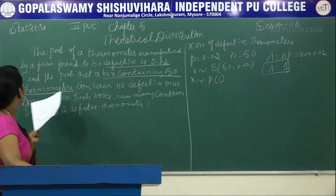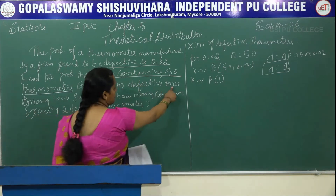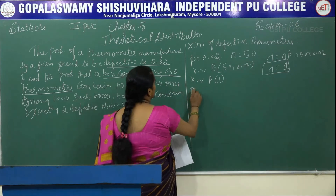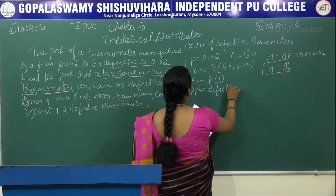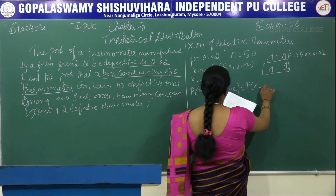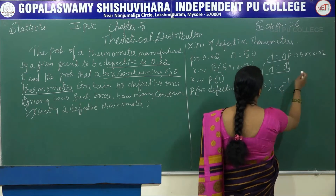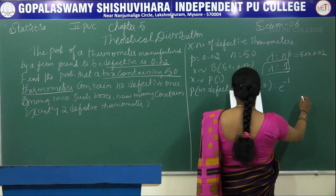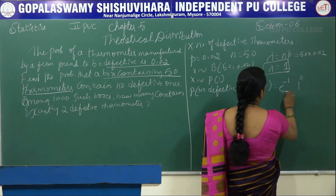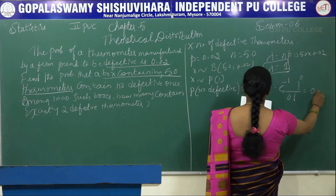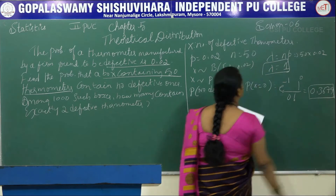We want to find the probability that a box contains no defectives, meaning X equals 0. P(X=0) equals e to the power minus 1 times 1 to the power 0 divided by 0 factorial, and this is 0.3679. You know how to calculate this on the calculator.